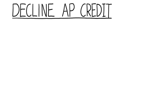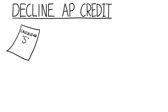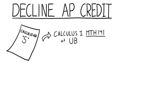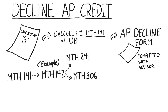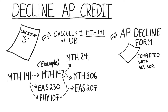You can also decline AP credit. So if you receive a 4 or 5 in AB Calculus and wanted to still take Calculus 1 anyway, you can decline the AP credit by completing a form. It's actually encouraged to consider declining AP credit for AB Calculus, as launching directly into Calculus 2 — even with having scored a 4 or 5 — can be challenging, and having a very strong and confident foundation in introductory calculus is essential for all the additional math and related classes to come.